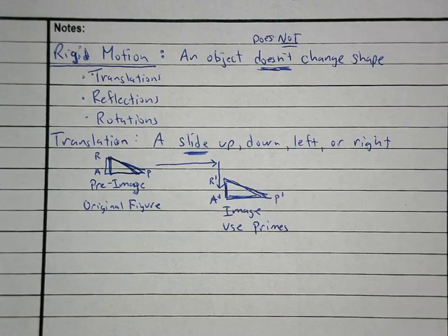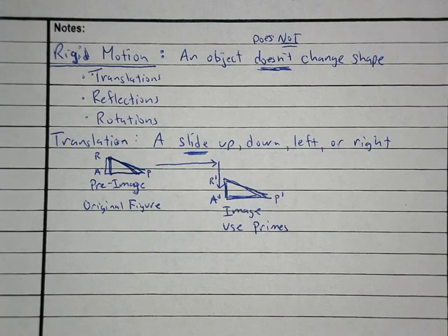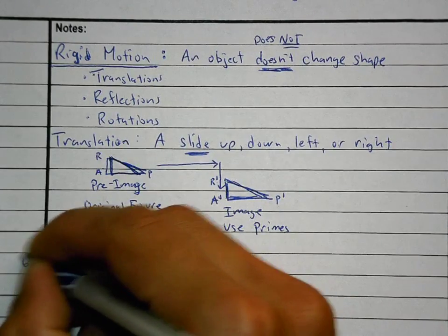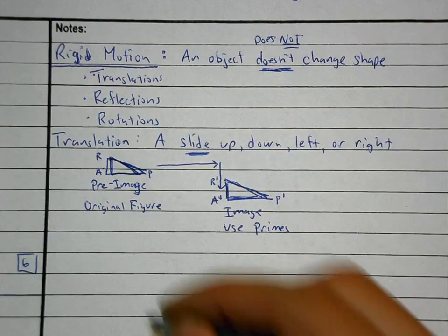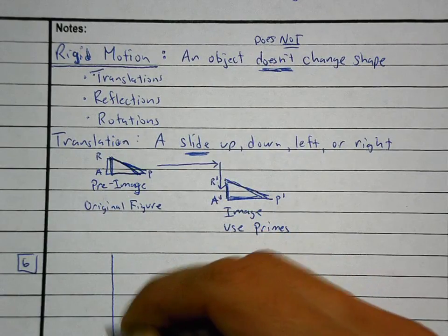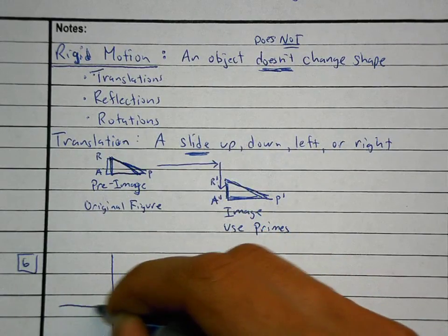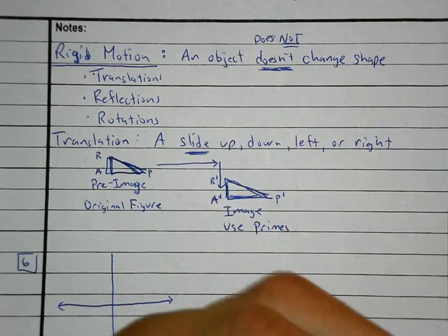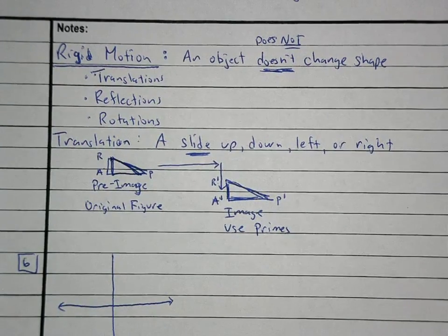What you're going to have to do today is translate objects. I'll give you an example — I'll give you an example like number six.